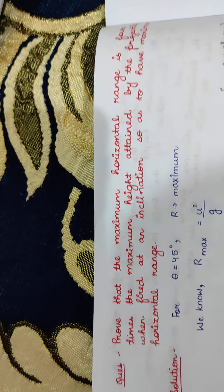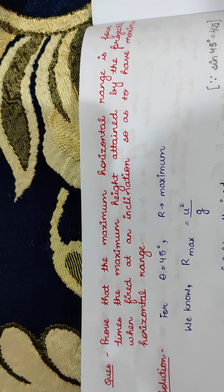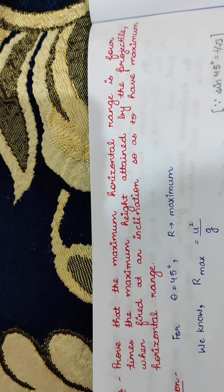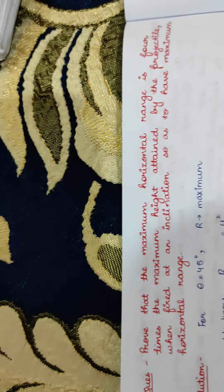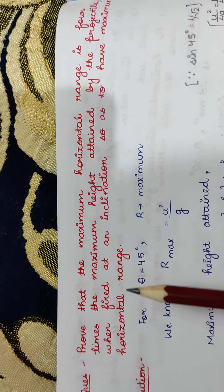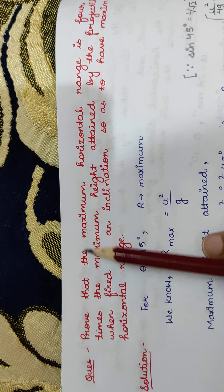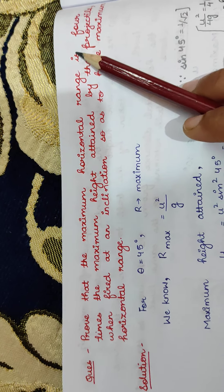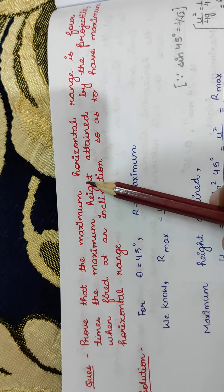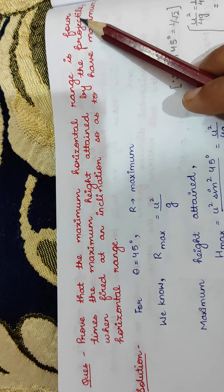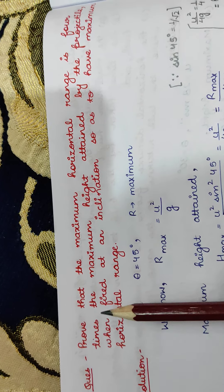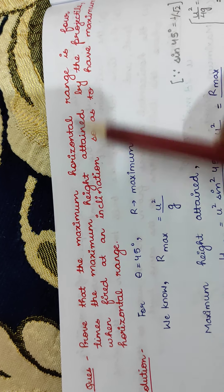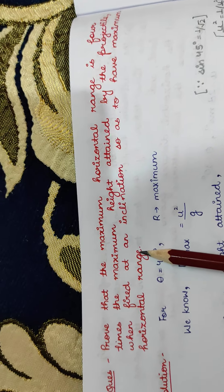Students, we will now consider some of the conceptual questions related to this topic: projectile motion. The first question is to prove that the maximum horizontal range is four times the maximum height attained by the projectile when fired at an inclination so as to have maximum horizontal range.